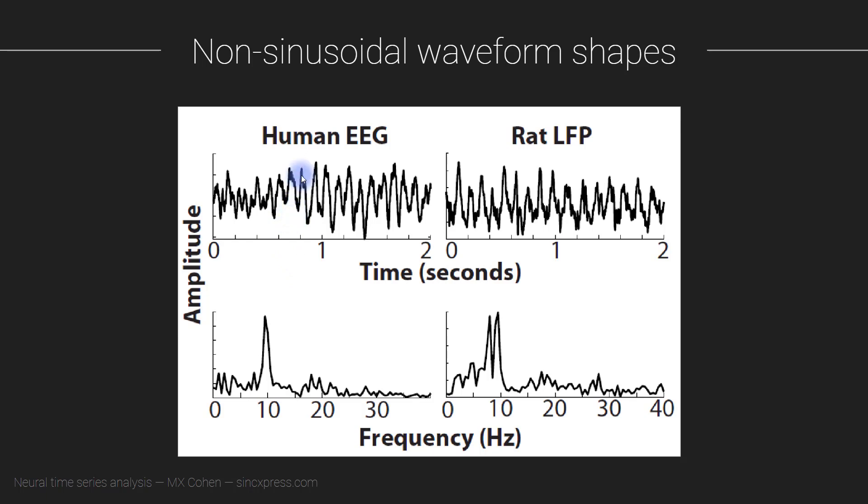Here you see another example. This is from human EEG. This is from rat local field potential. So this is recorded outside the brain in a human. This is recorded in a rodent with an electrode that was implanted directly into the brain. And you see also very strong patterns of rhythmic activity. And you see also that they are not necessarily sine waves.